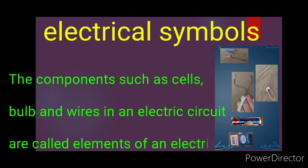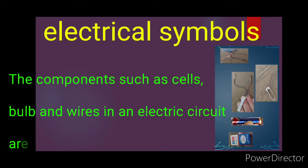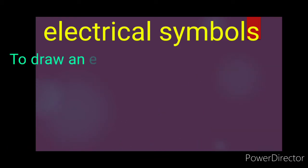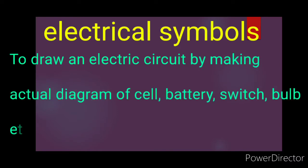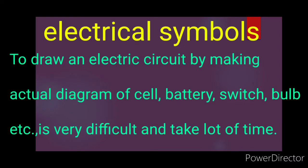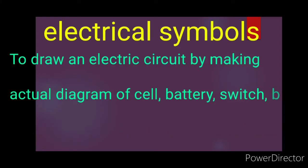The components such as cell, bulb, and wires in an electric circuit are called components of an electric circuit. To draw an electric circuit by making actual diagrams of cells, batteries, and bulbs is very difficult and takes a lot of time.